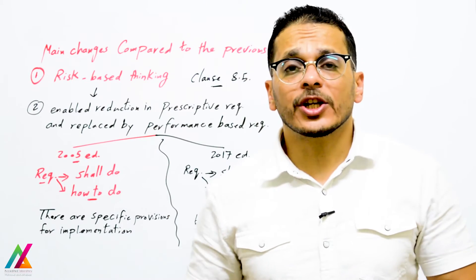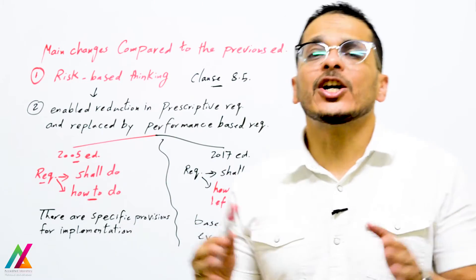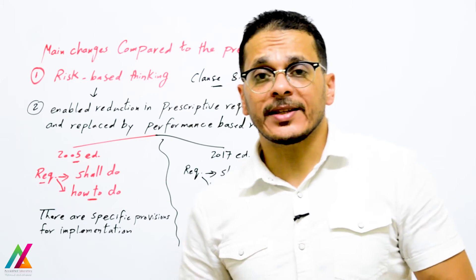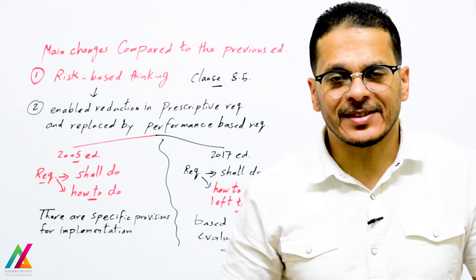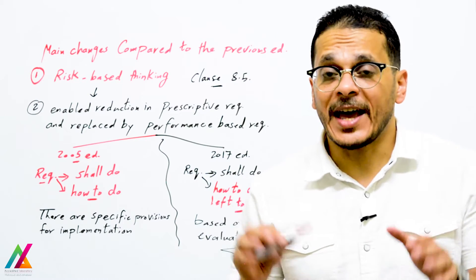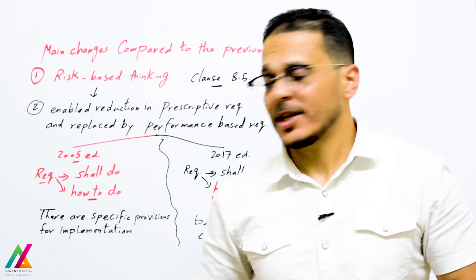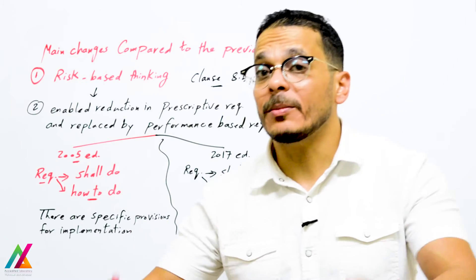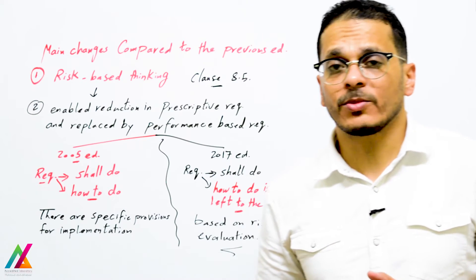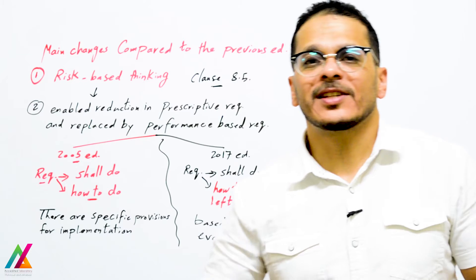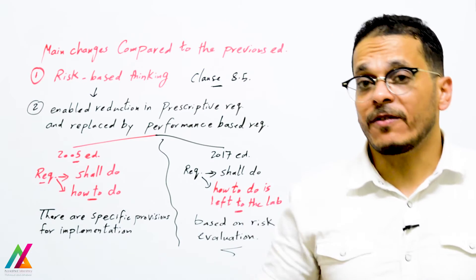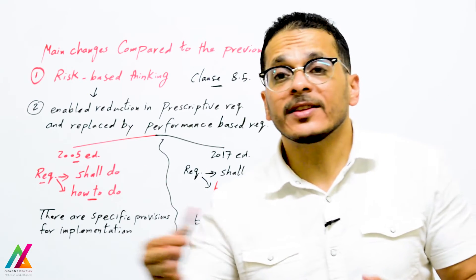By evaluating risk on each lab activity, this enables a reduction in prescriptive requirements and a reduction in the number of documents used inside the lab, replaced more by performance-based requirements. In the 2005 edition, requirements specified both what to do and how to do it with specific provisions for implementation. In the 2017 edition, the requirements specify what to do but how to do it is left to the lab, based on their risk evaluation and performance.